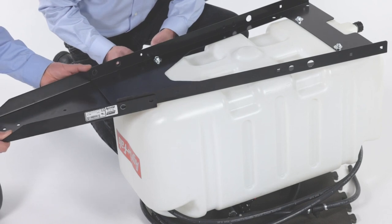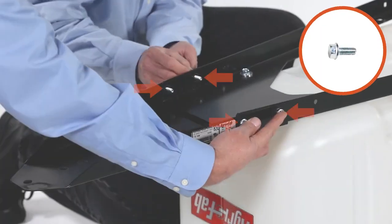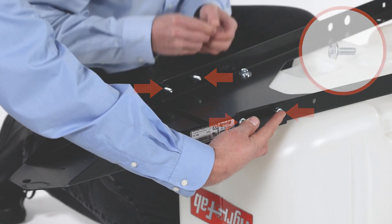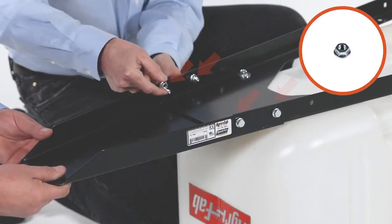Then align the hitch triangle, Part 6, and fully secure it with 4 5/16 by 3/4-inch flange bolts, Part A, and 4 5/16 inch whizlock nuts, Part C.